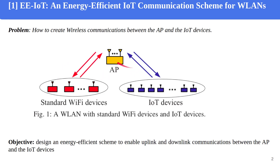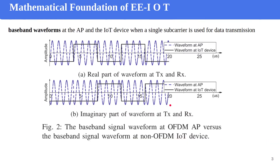Let me tell you the problem statement. As you can see here, an access point can serve both IoT devices and standard Wi-Fi devices. The access point takes advantage of time division multiplexing, meaning it serves both different devices in different time slots, so there is no interaction and interference between Wi-Fi devices and IoT ones. The objective is that in such a wireless local area network (WLAN), we need to design an energy-efficient scheme to enable wireless communications for both uplink and downlink between the access point and IoT devices.